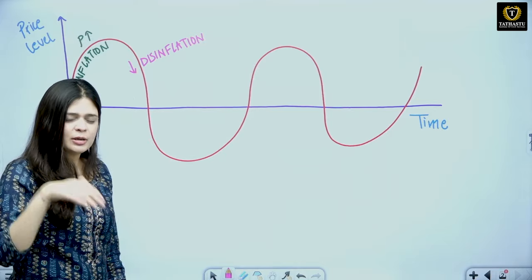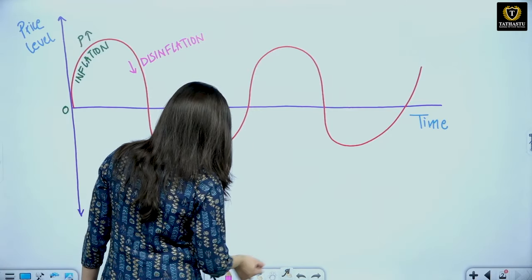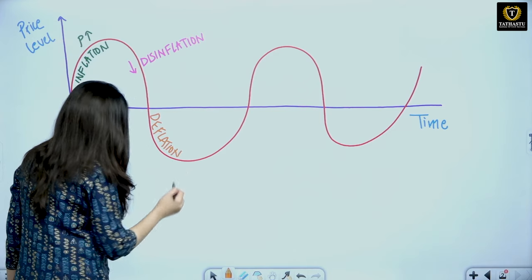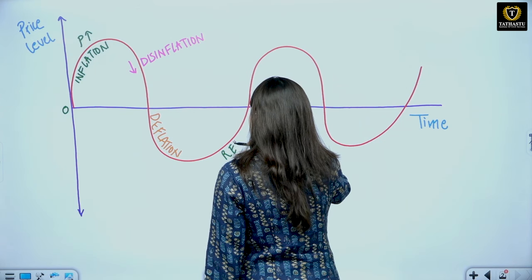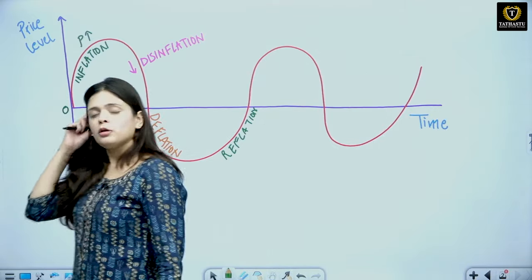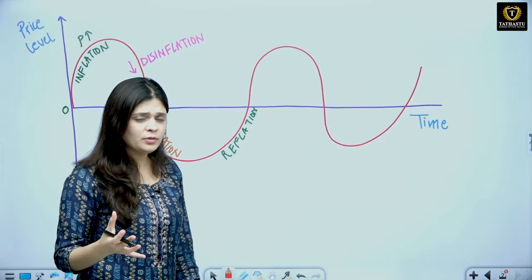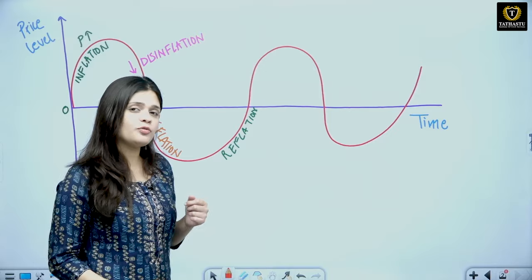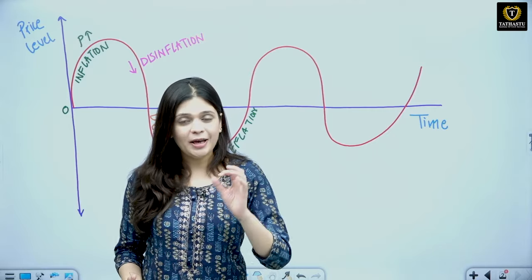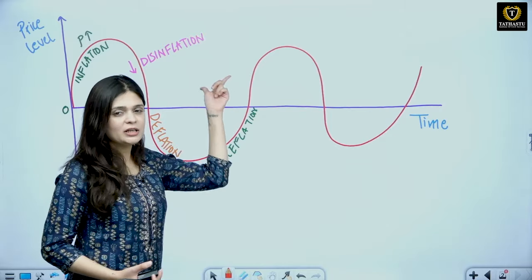When the price level decreases and keeps on decreasing, that is the opposite of inflation — that is deflation. Disinflation is good for the economy since your inflation is coming down. However, the RBI and the government become very vigilant in this phase, because they know that anything could lead to an upward or downward movement. So if inflation is decreasing but not going negative — negative would mean price levels are decreasing enough to cause deflation — disinflation is positive, but the government and RBI remain careful using monetary and fiscal policy tools.